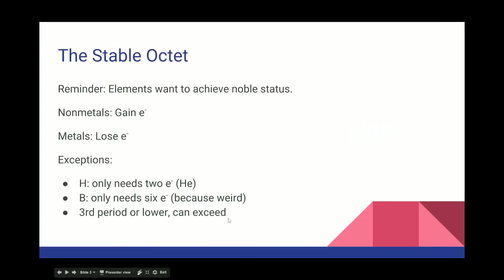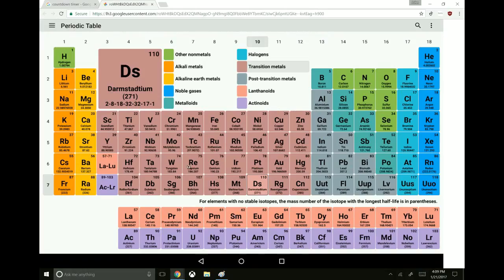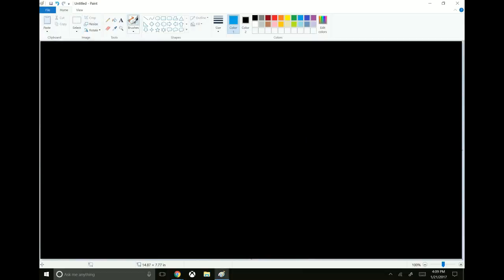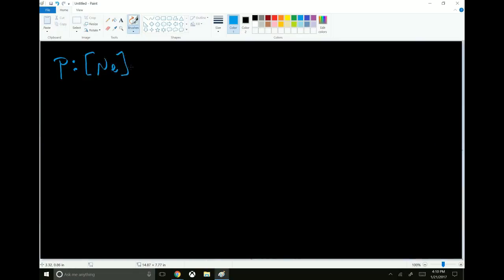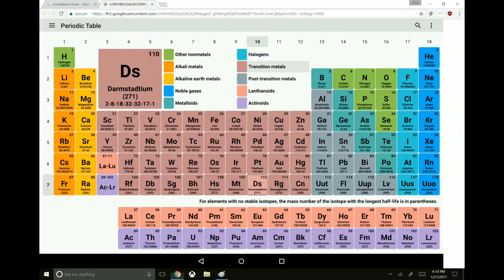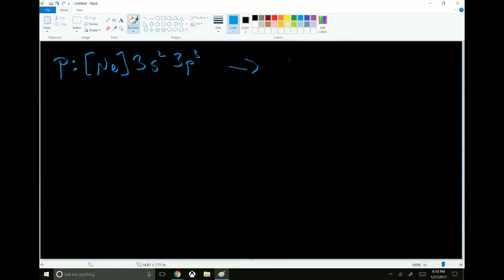And finally, if you're in the third period or below, you can exceed the stable octet. So third period means third row, or below, so the heavier elements, but not row one or row two. And let's take a look at phosphorus. Okay, phosphorus. Phosphorus is here in the third row, just below nitrogen. The previous noble gas is neon. So its abbreviated electron configuration is neon, 3s2, 3p3. So ordinarily, it wants to look like the next noble gas, the one to its right, argon. So it wants to gain three more electrons to become 3s2, 3p6.